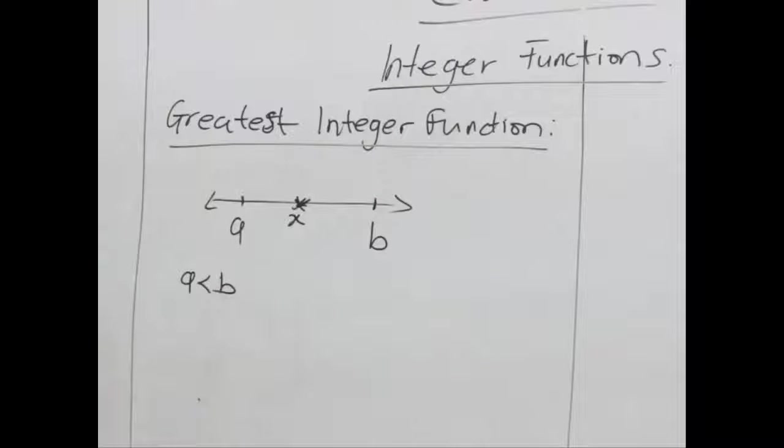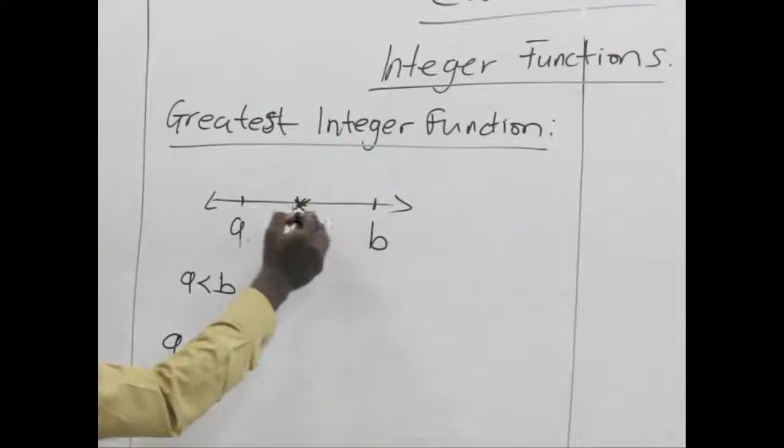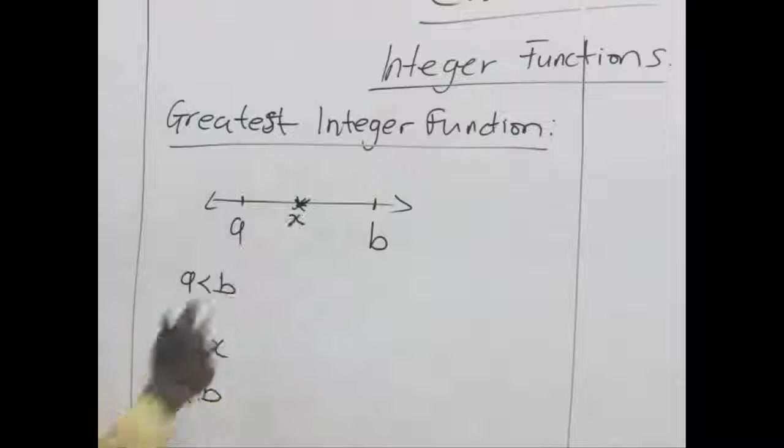So to illustrate this, let's say when we take a and b in respect to x. We can see that a is lesser than x. And x is also lesser than b. So we can say b is greater than x. A is lesser than x.